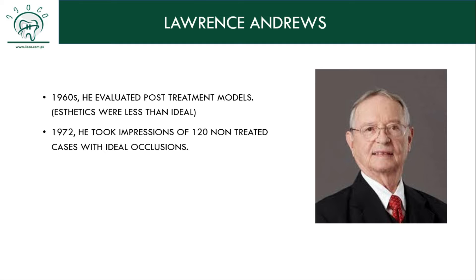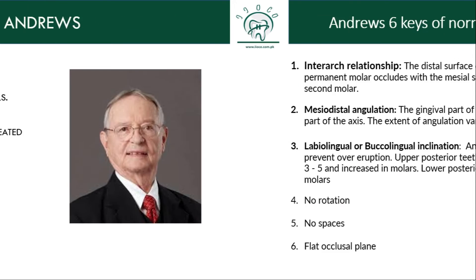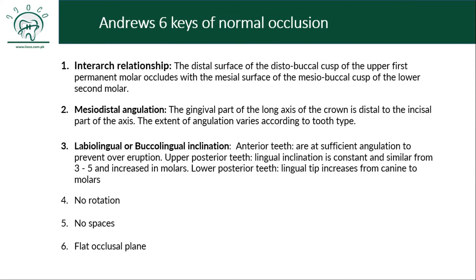He was not very much satisfied with the results, especially the aesthetics he was trying to give to his patients. He was confused about why he was not being able to deliver the best aesthetics. Then he decided to research on that. In the 1970s he took impressions of 120 non-treated normal cases with ideal aesthetics and ideal occlusion — those were 120 non-treated cases. He then evaluated those models and identified the characteristics of natural occlusion, finding these six keys of normal occlusion.